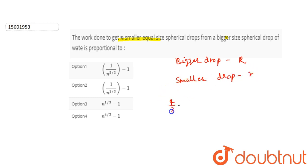That is the bigger drop. The total volume will be equal to n times smaller drops. Okay, from here, the smaller drop's radius r will be equal to R divided by n to the power 1 by 3.